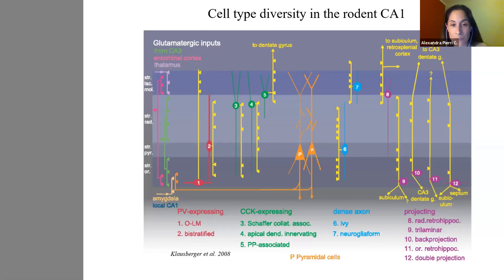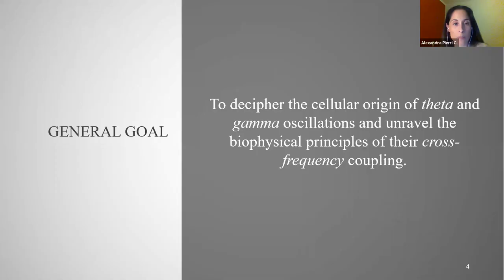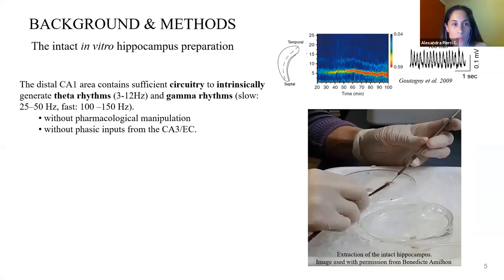The CA1 hippocampus, particularly, has a large variety of inhibitory cells. However, a cell-type-centric explanation of these rhythms is still missing. So my goal has been, in general, to decipher the cellular origin of theta and gamma oscillations and to unravel the biophysical principles of their cross-frequency coupling.